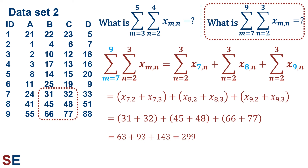For the second double summation, m goes from 7 to 9 (rows 7 to 9) and n from 2 to 3 (columns 2 and 3). Expanding for m=7, 8, 9 gives: summation n from 2 to 3 of x_{7,n}, plus x_{8,n}, plus x_{9,n}. That's x_{7,2}+x_{7,3} plus x_{8,2}+x_{8,3} plus x_{9,2}+x_{9,3} = 31+32 plus 45+48 plus 66+77 = 63+93+143 = 299.